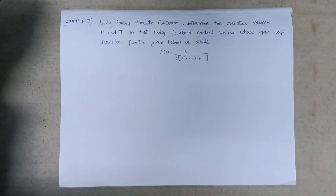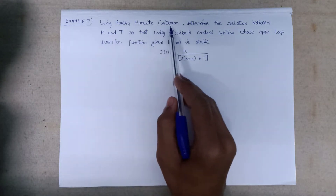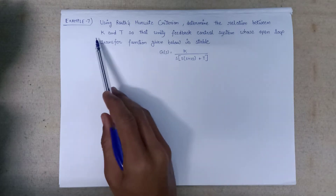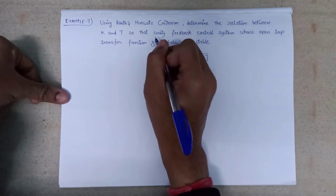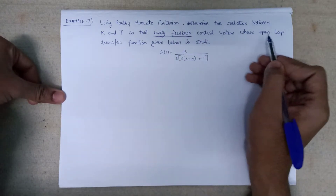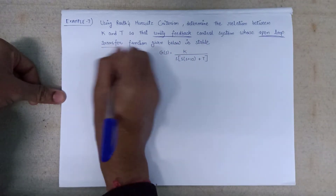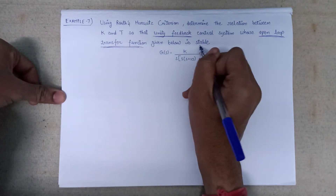Welcome all. In this lecture we are going to solve example number 7: using the Routh-Hurwitz criteria, determine the relation between k and t so that the unity feedback control system whose open loop transfer function is given below is stable.